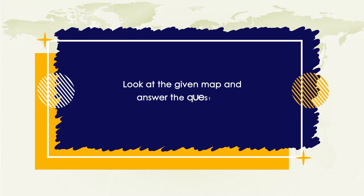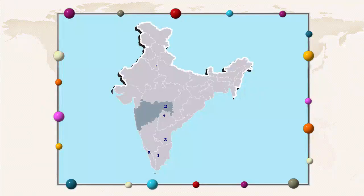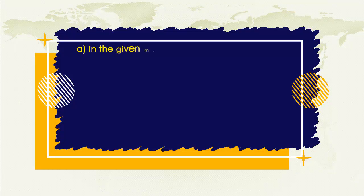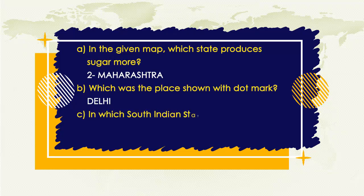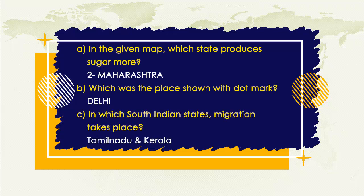Look at the map and answer the questions. In the given map, which state produces more sugar? Answer: Maharashtra. Which place was shown with a dot mark? Answer: Delhi. In which South Indian states does migration take place? Answer: Tamil Nadu and Kerala.